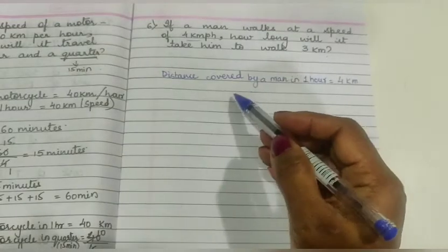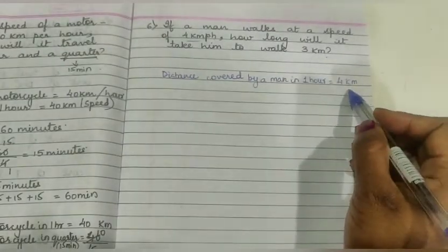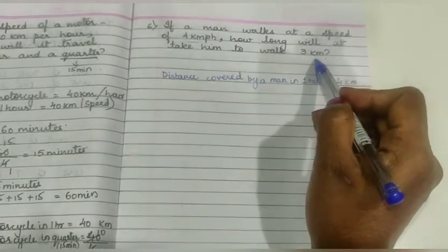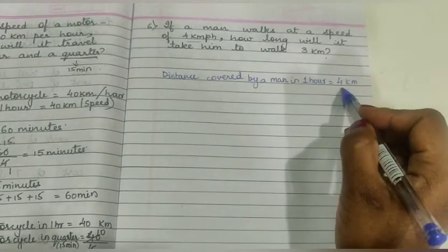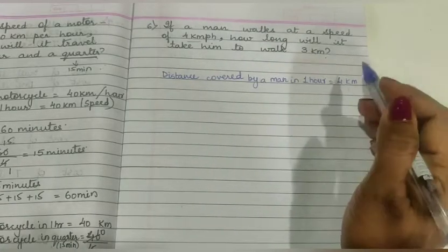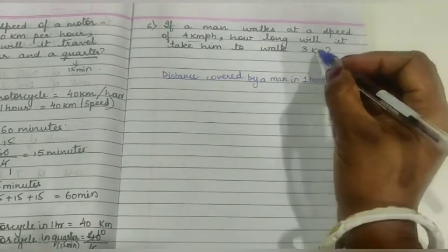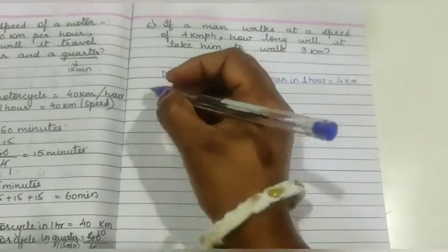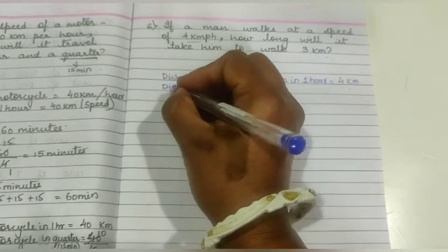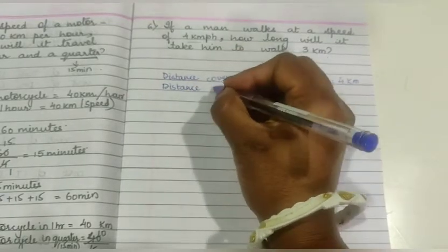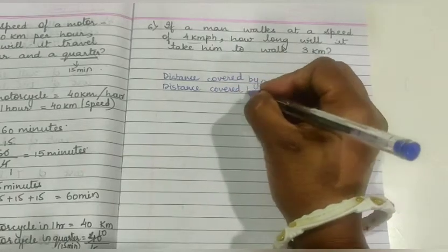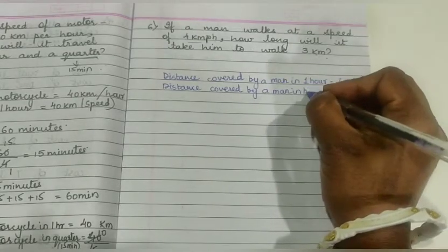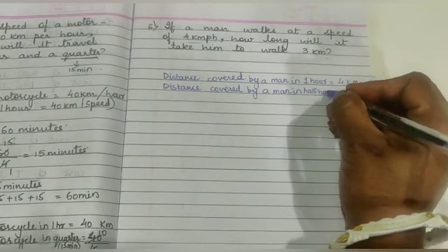Distance covered by a man in 1 hour is equal to 4 km. How long will it take him to walk 3 km? In 1 hour, if he covers 4 km, how much will it cover in 3 km? That we have to find out. So, let us write distance covered by a man in half an hour.